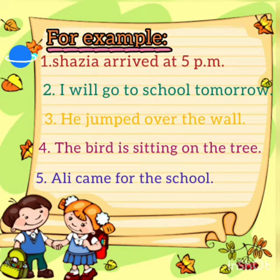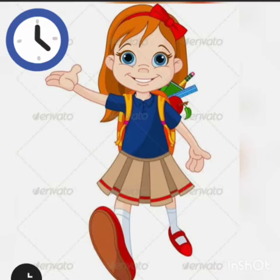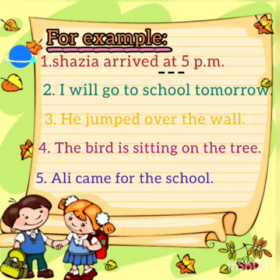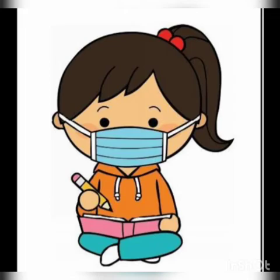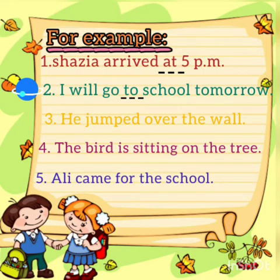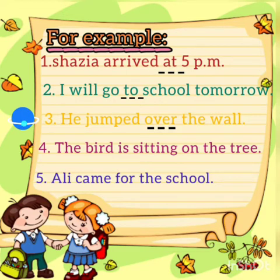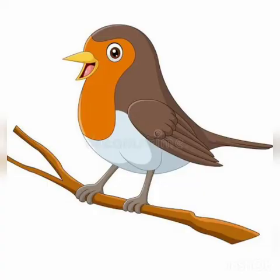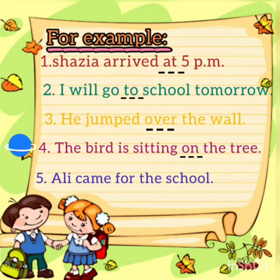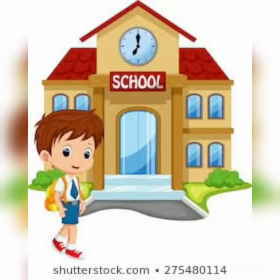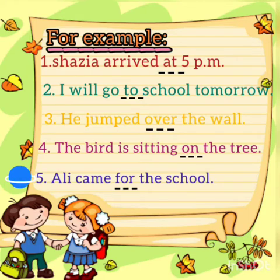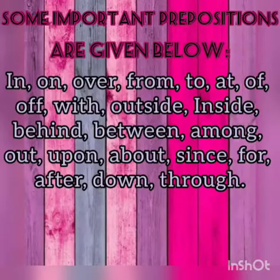For example, number 1: Shazia arrived at 5 PM. यहाँ पर at preposition है और at को हम specific time के लिए यूज करते हैं. Number 2: I will go to school tomorrow. यहाँ पर to preposition है और to हम किसी भी direction के लिए यूज करते हैं. Number 3: He jumped over the wall. यहाँ पर over preposition है और over हम उपर से गुज़रने के लिए यूज करते हैं. Number 4: The bird is sitting on the tree. यहाँ पर on preposition है और उपर रखी हुई चीज के लिए हम on यूज करते हैं. Number 5: Ali came for the school. यहाँ पर for preposition है और for इस्तमाल होता है के लिए.